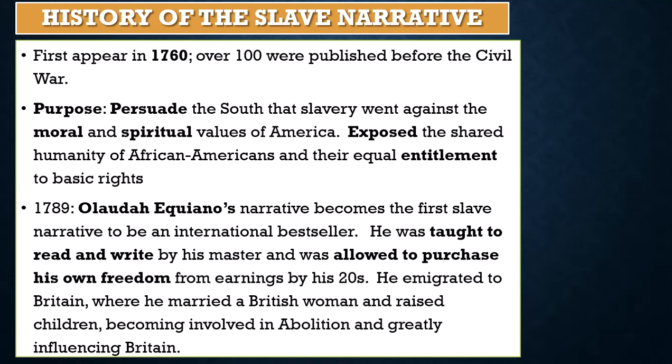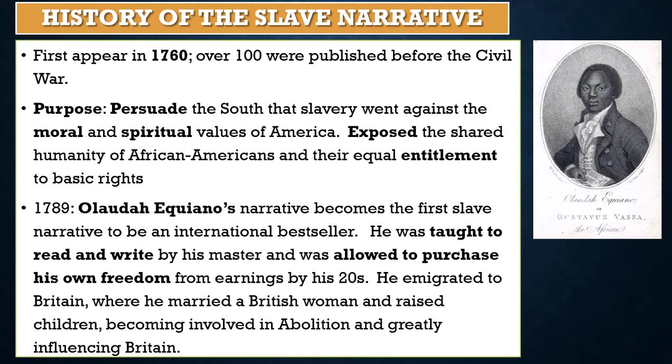This is much different than later on, where we have people who are slaves for life. The traditional setup of slavery was more like this — people were conquered, typically from a war, enslaved for a certain period of time, and then eventually able to purchase their freedom. At any rate, Equiano emigrated to Britain, married a British woman, raised children, and became involved in abolition, greatly influencing Britain.